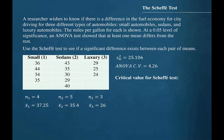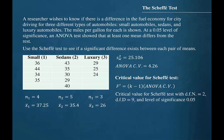In order to find the critical value for the Scheffé test, we multiply one less than the number of populations by the critical value for the one-way ANOVA test. So the critical value for the Scheffé test with two degrees of freedom in the numerator and nine degrees of freedom in the denominator and a significance level of 0.05 will be found by multiplying 3 minus 1 by 4.26.